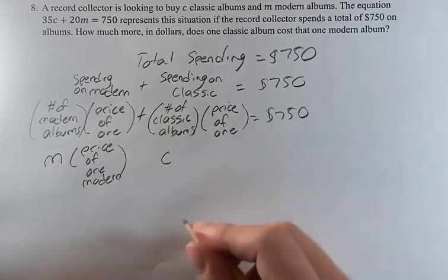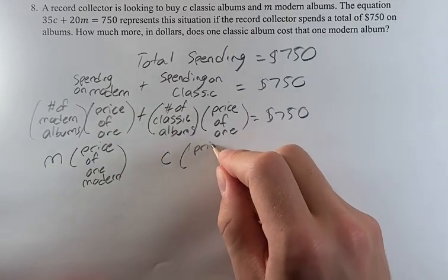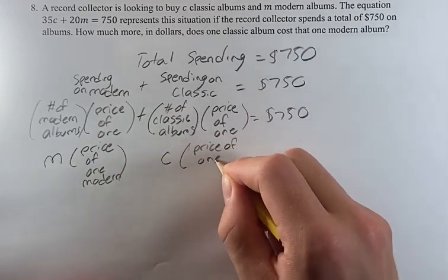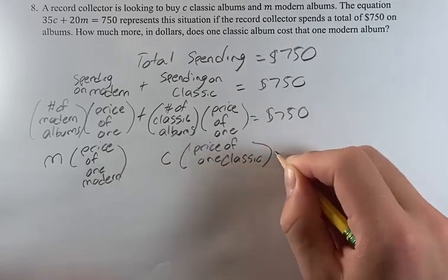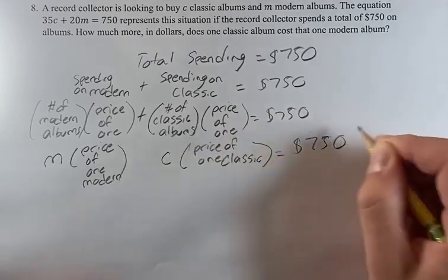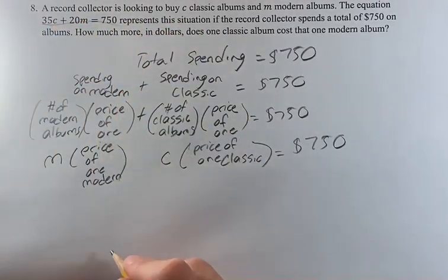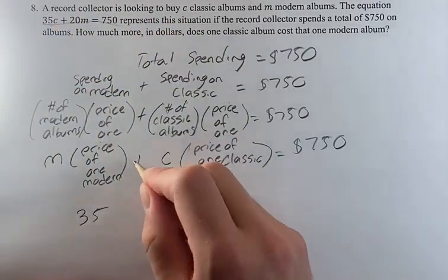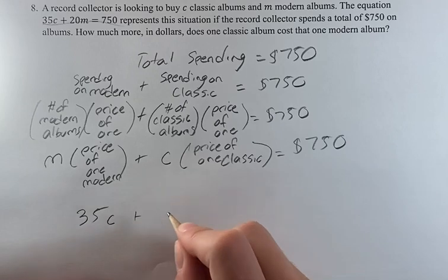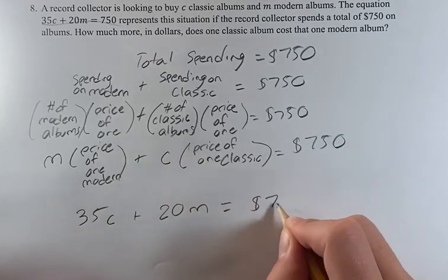So the modern price times M plus the classic price times C is equal to that same $750. I'm going to write this down here. 35C plus 20M is equal to $750.